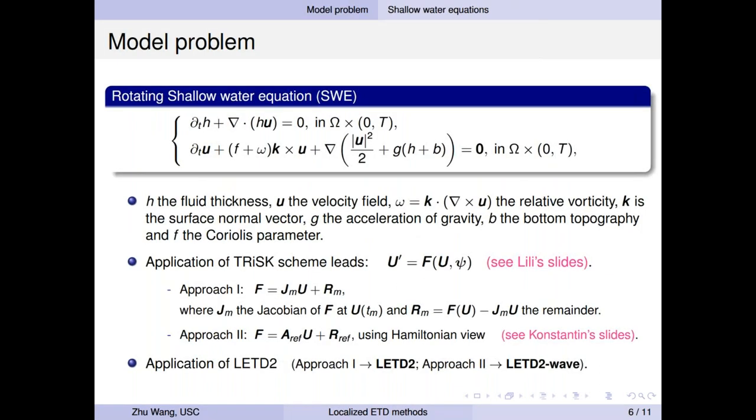So here, let's look at one model problem. This is a single layer rotating shallow water equation. We use a DG scheme for spatial discretization, just as Lily did. And the resulting semi-discrete system will be U prime equals F of U. Then we propose two approaches. In the first one, F is linearized by using its Jacobian evaluated at the current numerical solution u_m. Then R_m is just a remainder term. Then the second approach, we use Hamiltonian system, just as Constantine used. So here, this term A_ref is just the Jacobian of the Hamiltonian system evaluated at a certain reference state. Then R_H will be the corresponding remainder.